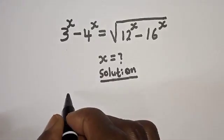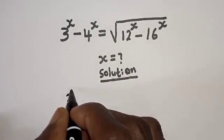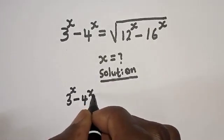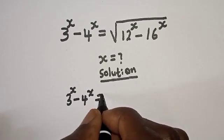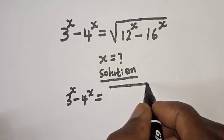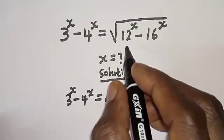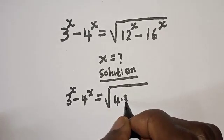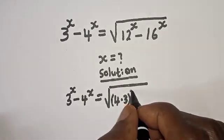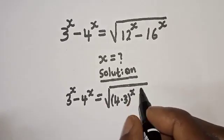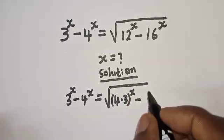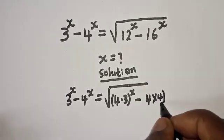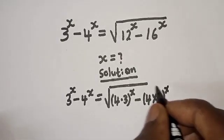The given equation: we have 3 raised to power s minus 4 raised to power s is equal to square root of 12. 12 can be written as 4 times 3, raised to power s, minus 16, which is 4 times 4, raised to power s.